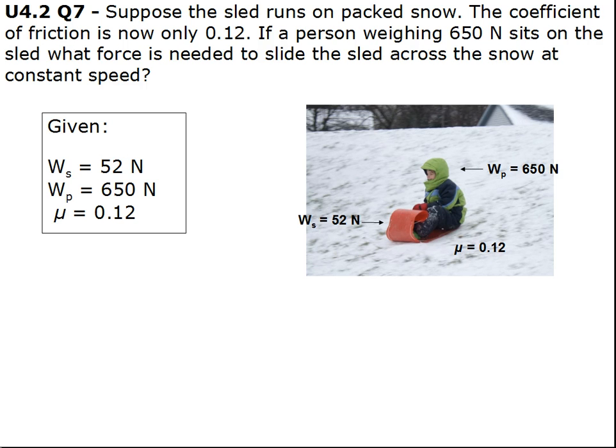To find this, we must find the frictional force using the formula Ff equals the coefficient of friction times the net force. To find the net force, we must add the weight of the sled and the weight of the person together. So 52N plus 650N equals 702N. So the net force of the sled and the person together is 702N.